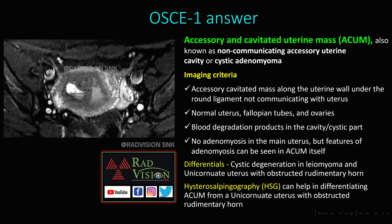The differential diagnosis includes unicornuate uterus with obstructed rudimentary horn. HSG can help in differentiating ACUM from unicornuate uterus with obstructed rudimentary horn. This concludes OSCE 1.